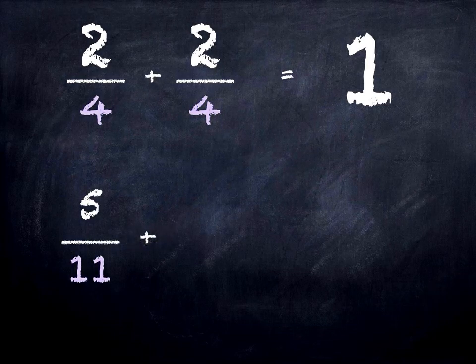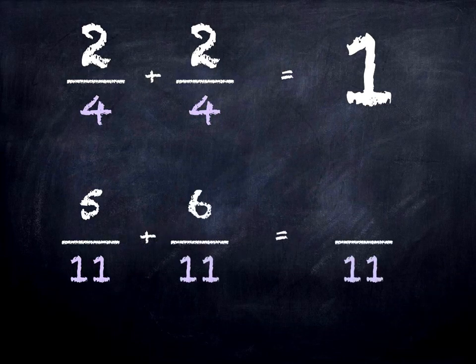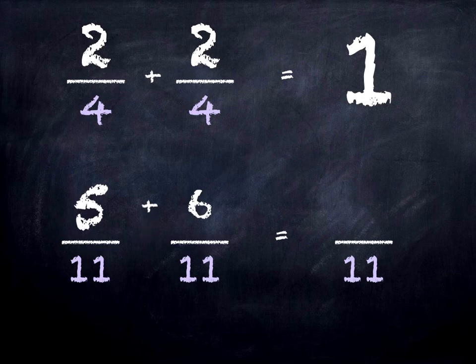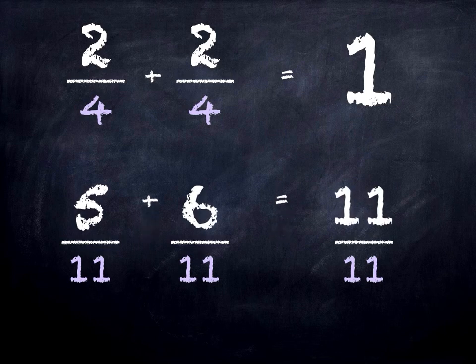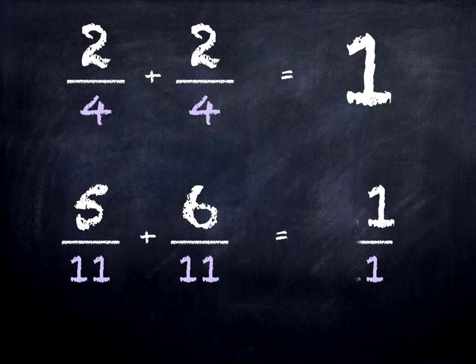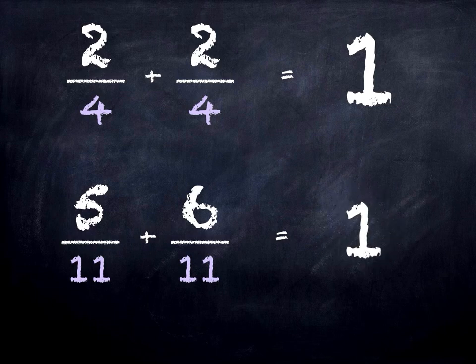Five elevenths plus six elevenths. Five plus six equals eleven elevenths, which is the same as one. So five elevenths plus six elevenths is one.